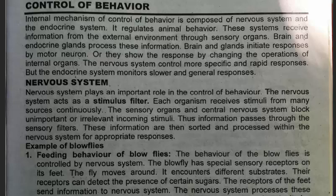So internal mechanism of control of behavior is composed of nervous system and endocrine system. یہ دو system ہمارے جسم کے اندر وہ control کرتے ہیں ہماری different activities کو۔ Brain control کرتا ہے اور hormones control کرتے ہیں جسے endocrine system کہتے ہیں۔ It regulates animal behavior. The system receives information from external environment through sensory organs.